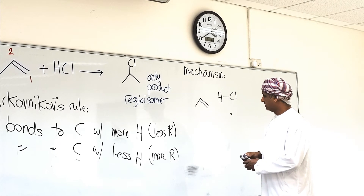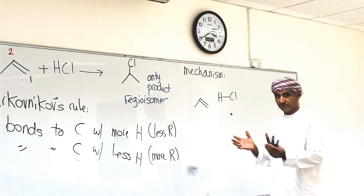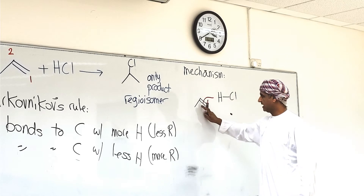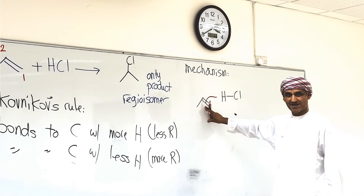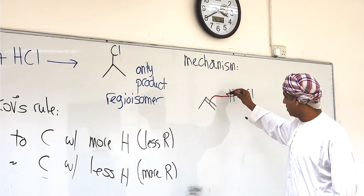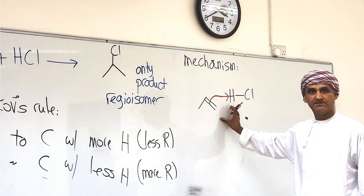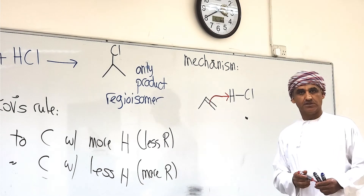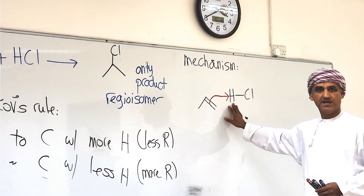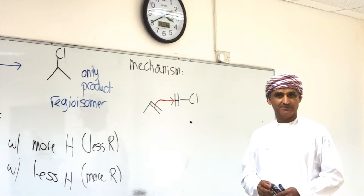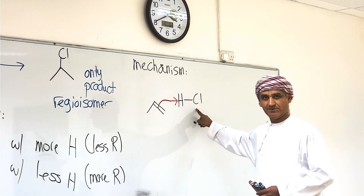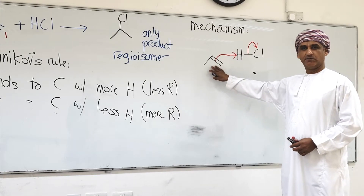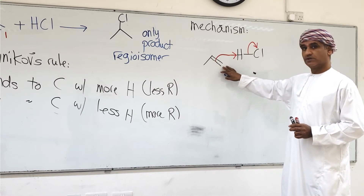Let's use curved arrows to show this. To indicate that a bond is being broken, the arrow must originate from the middle of that bond. This arrow indicates breakage of the carbon-carbon pi bond and should arrive on hydrogen to indicate formation of a bond between carbon and hydrogen. According to valency rules, hydrogen cannot be surrounded by more than two electrons, which means the hydrogen-chlorine bond must be broken at the same time.